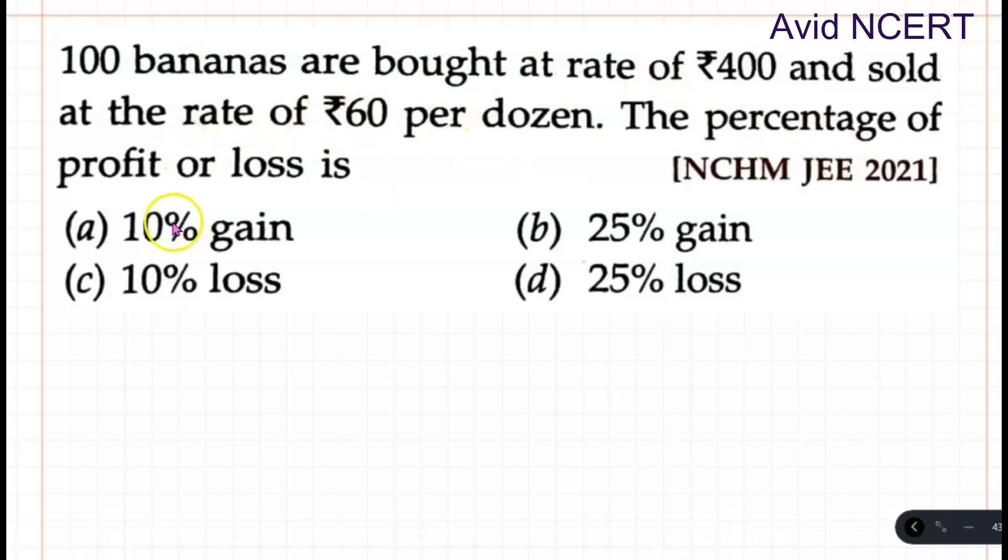The data we have here is 100 bananas are bought at the rate of rupees 400, which means one banana will be equal to 400 divided by 100, which equals 4 rupees. 100 and 100 gets cancelled, so 4 rupees.